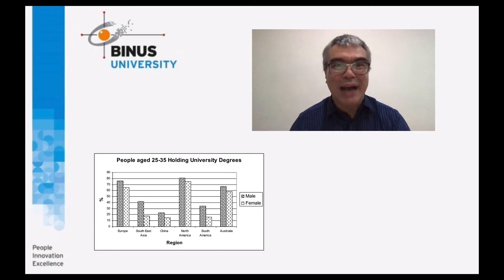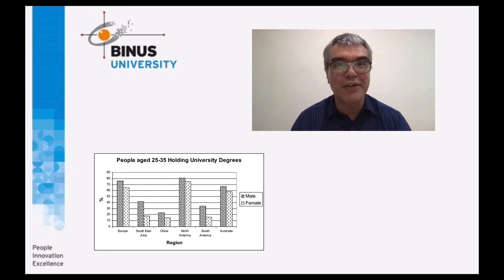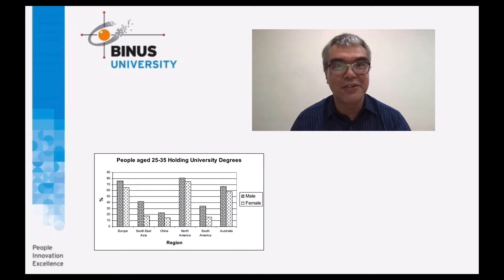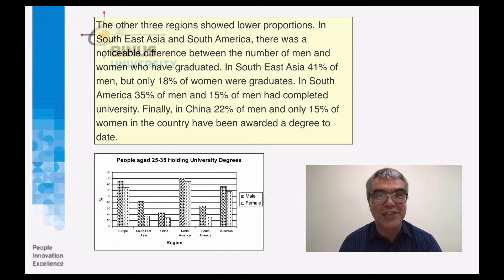Hi, welcome back. We're looking at an example description of a bar graph question. There have been two lessons before — we've looked at the overview and we've looked at paragraph one of the details, where we described the three highest countries. There are three other countries left, and let's look at the description for this.